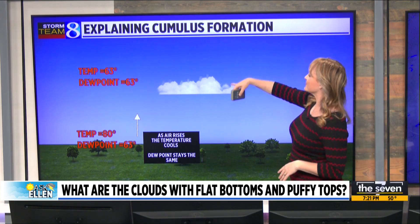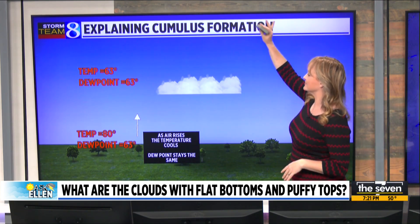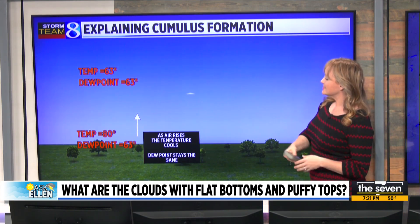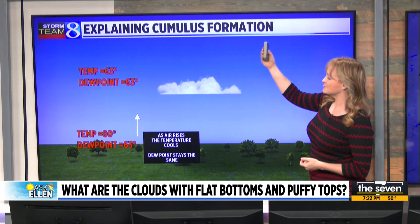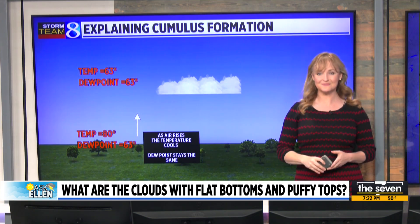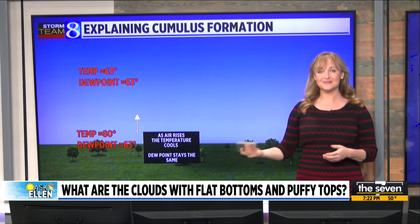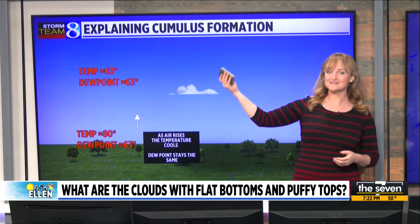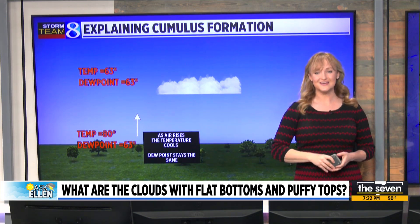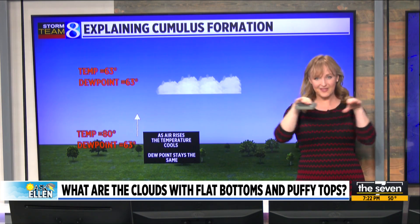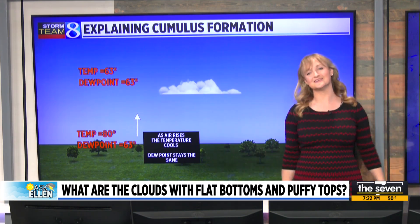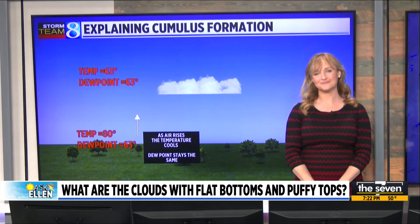From there, the cloud continues to grow into a level of free convection. This happens because as air rises, it cools off, but the dew point stays the same. So gradually, as air rises on a day where there's moisture aloft, you will see that flat bottom with that chaotic top as the cloud continues to rise.